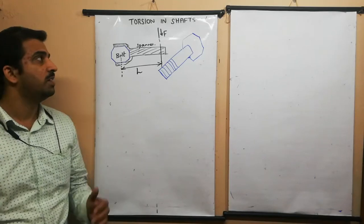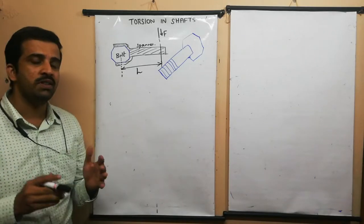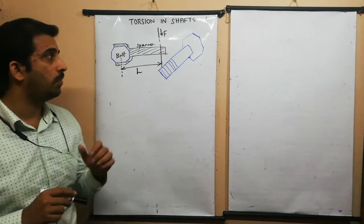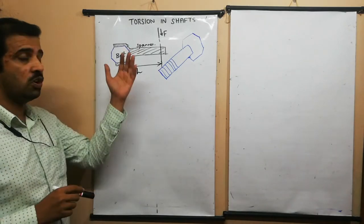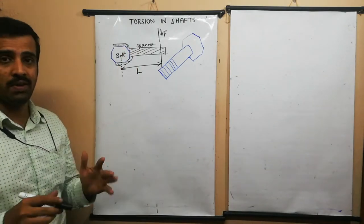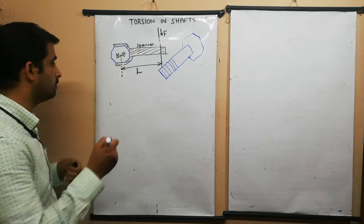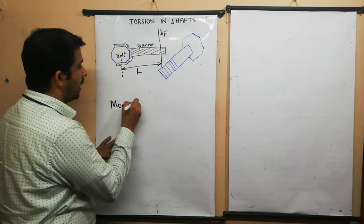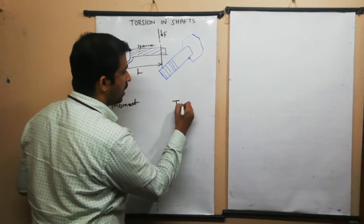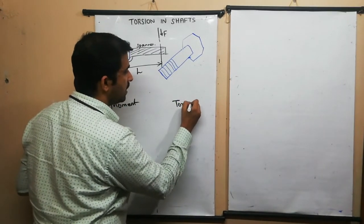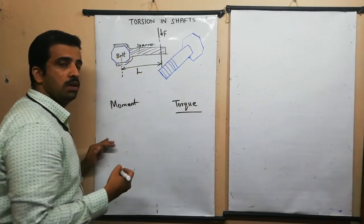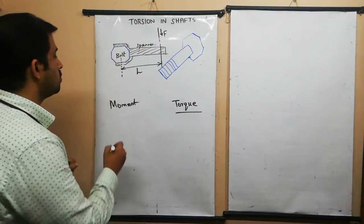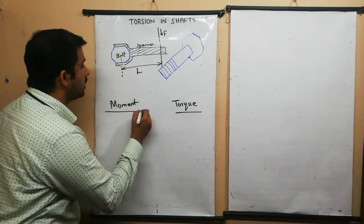Hello friends, welcome to this lecture. In this section we will see the topic of torsion in shafts. To study torsion in shafts, we should be aware of two terms: the first term is 'moment' and the second term is 'torque.' After understanding torque, only then can we move to the term torsion.